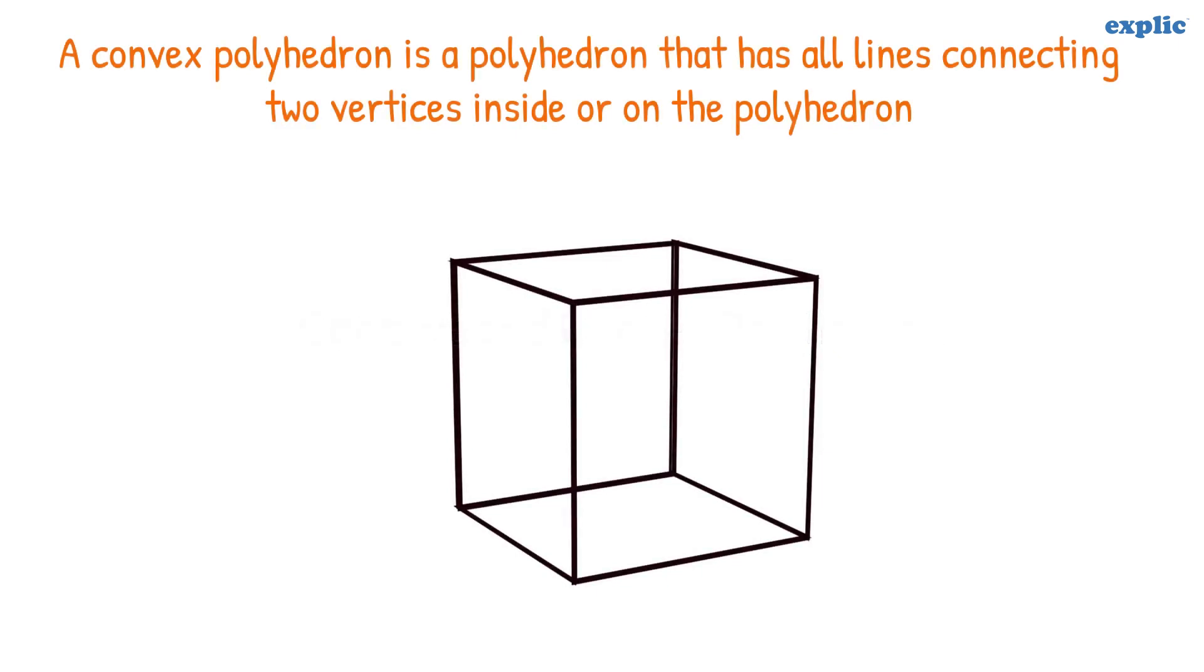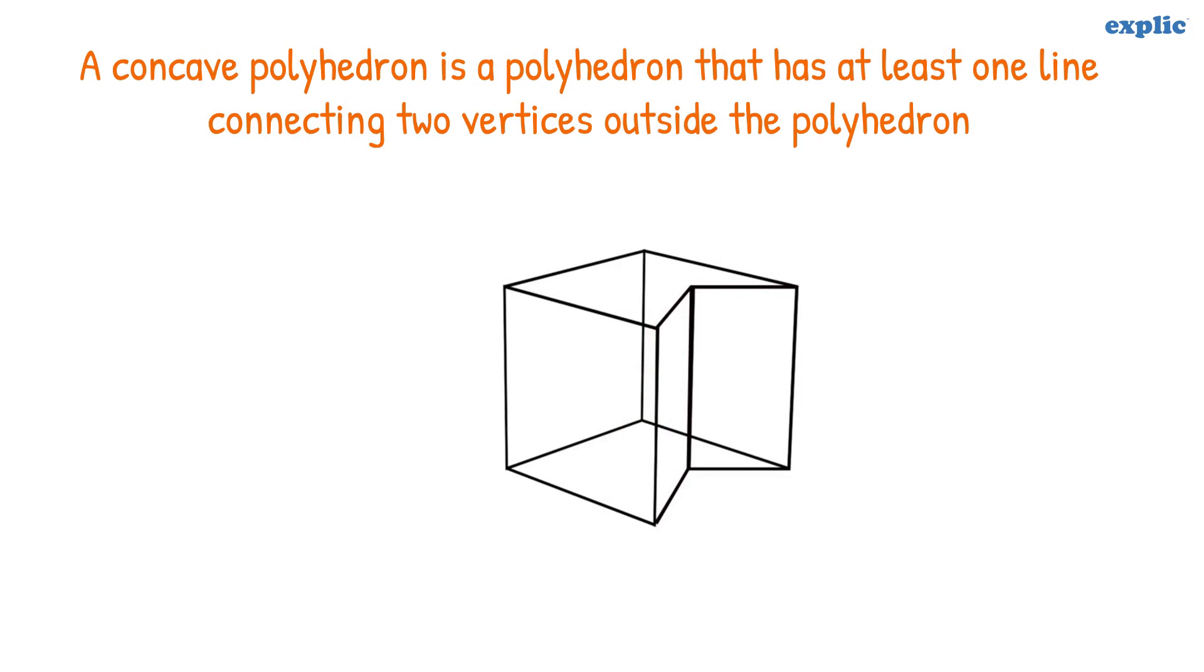A convex polyhedron is a polyhedron that has all lines connecting two vertices inside or on the polyhedron. A concave polyhedron is a polyhedron that has at least one line connecting two vertices outside the polyhedron.